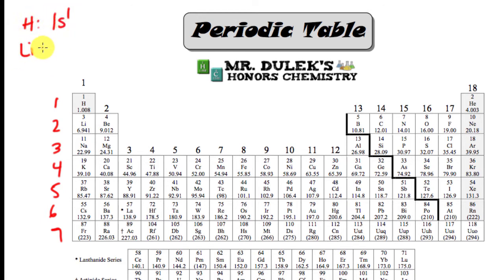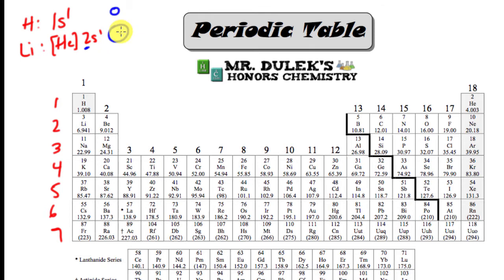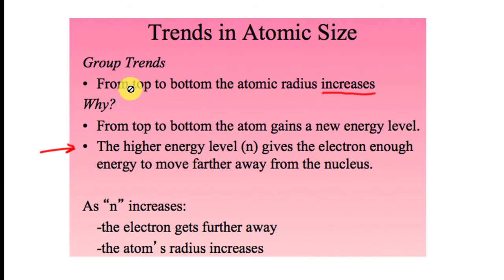Hydrogen has the configuration 1s¹. Lithium has the configuration [He] 2s¹. Lithium is bigger not just because it has more protons and electrons, but because its valence electron is in a higher energy level — n=2 versus n=1 for hydrogen. Adding a new energy level makes the atom larger. So from top to bottom, as the energy level n increases, the electron gets further away and the atomic radius increases.